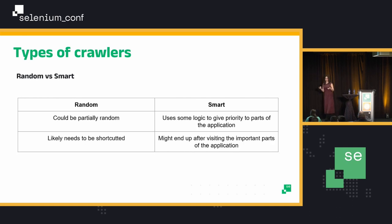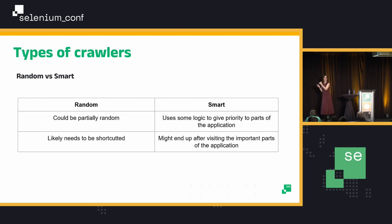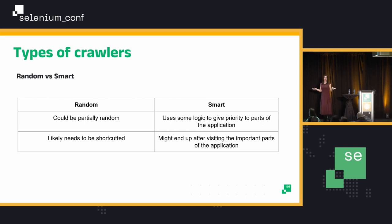Another type of crawler is random versus smart. Random could also be partially random, which means you can have some kind of view-first or depth-first approach, but then do it randomly. And the smart crawler uses some smart logic to give priority to parts of the application. Some parts of applications are always going to be more important than others — if you're looking at pricing or sensitive data, that's probably something you want to test more substantively, so you want to give priority to those parts. The random one likely needs to be shortcutted because you're going randomly, so at some point you need a cutoff like 'we've done enough views.' For smart, it may end just after you visit those important parts.